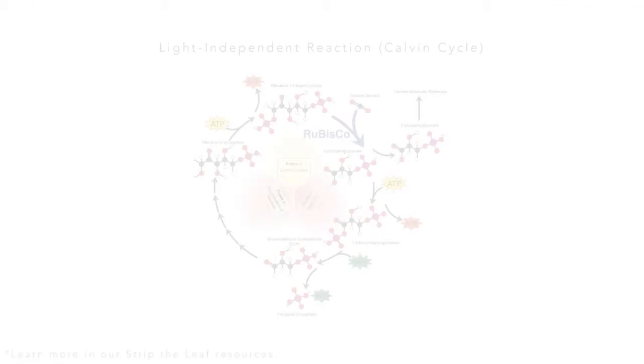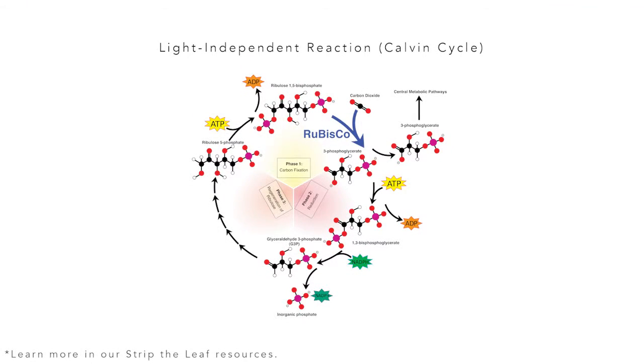So that was all about the light-dependent part of the reaction. But now we're back in the lab, we can think about the light-independent part of the reaction. This is where the ATP and NADPH that we've just made can be used to produce glucose or sugars that help the plant to grow, and also make them tasty.